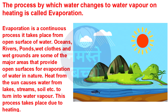Oceans, rivers, ponds, wet clouds, and wet grounds after rains are some of the major areas that provide open surfaces for evaporation of water in nature.